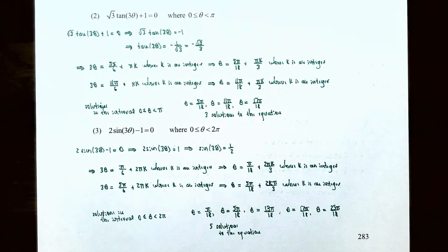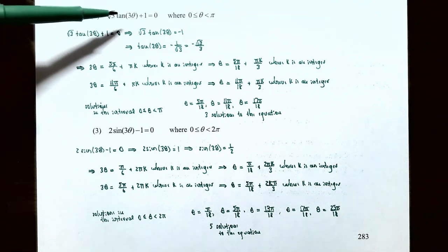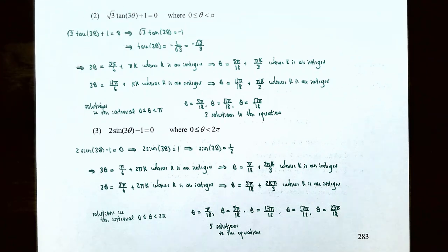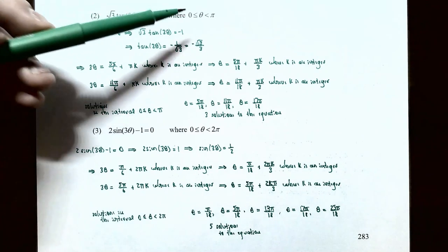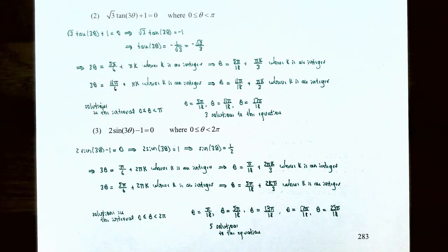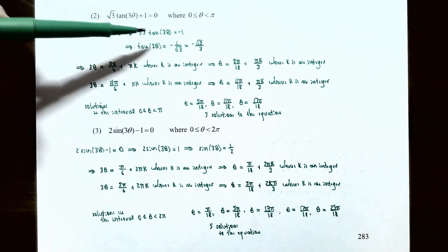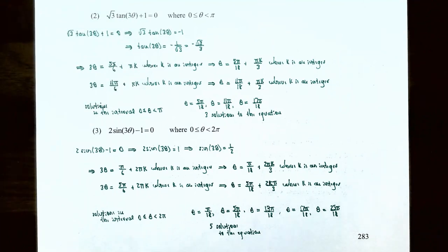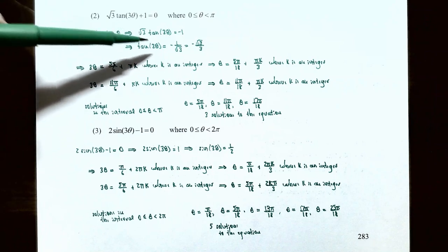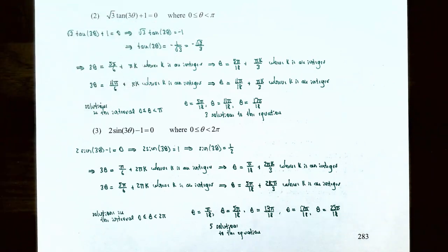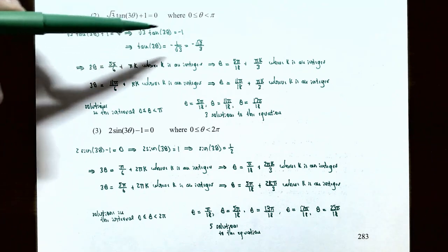Number two: the equation is square root three times tangent of three theta plus one equals zero, where theta is between zero and pi. Isolating the tangent: subtract one, then divide by square root three. So tangent of three theta equals negative one divided by square root three. Rationalizing the denominator gives tangent of three theta equals negative square root three divided by three.